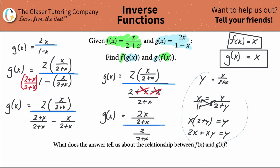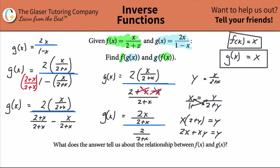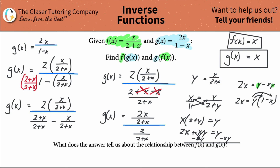Now bring the y terms to one side. Subtract xy from the right: two x equals y minus xy. Factor out y: two x equals y times one minus x. If you redistribute the y it gives y minus xy, so that's correct. Divide both sides by one minus x, and we get y equals two x over one minus x.